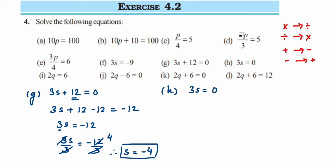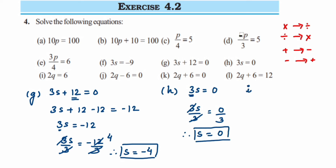Problem h: 3s = 0. This is very simple. The 3 is in multiplication, so divide 3 on both sides. The 3s cancel. When you divide 0 by any number, the answer is always 0. So 0/3 = 0, therefore s = 0 is the answer.